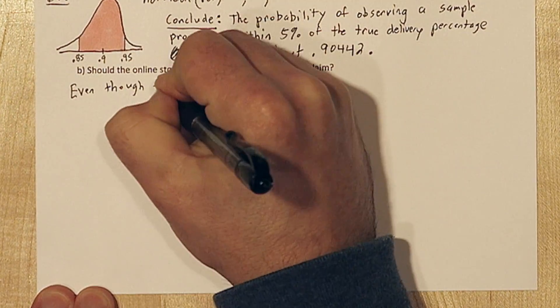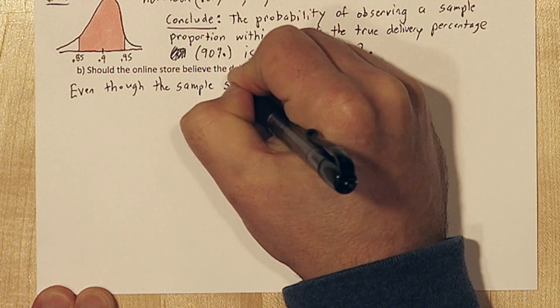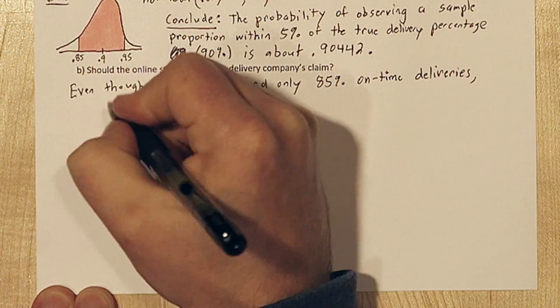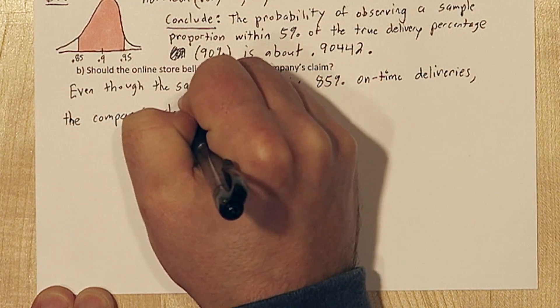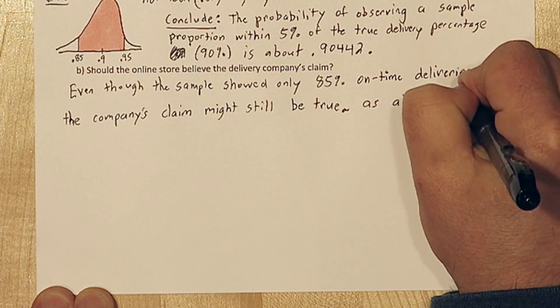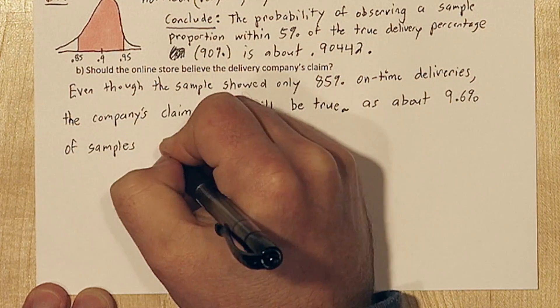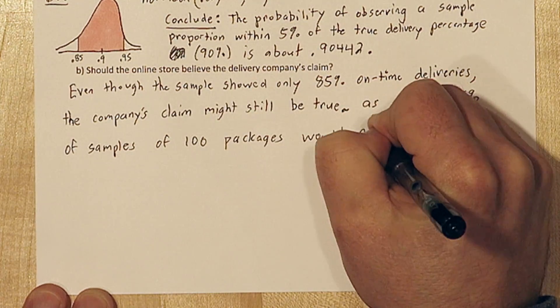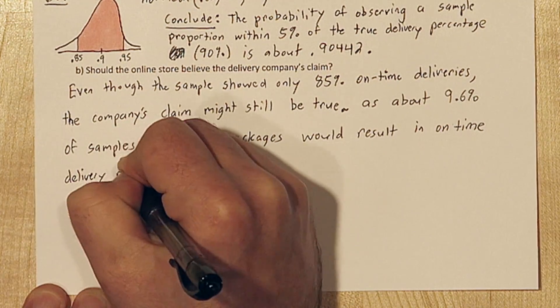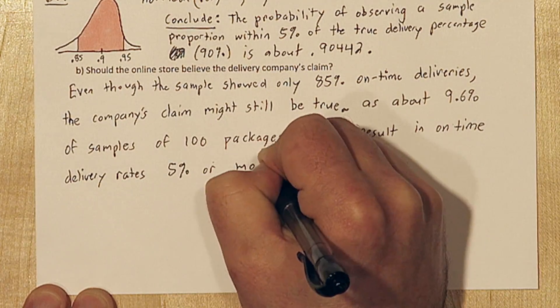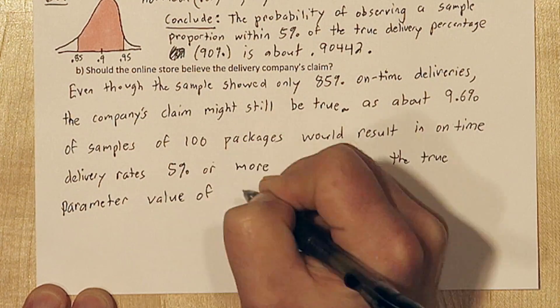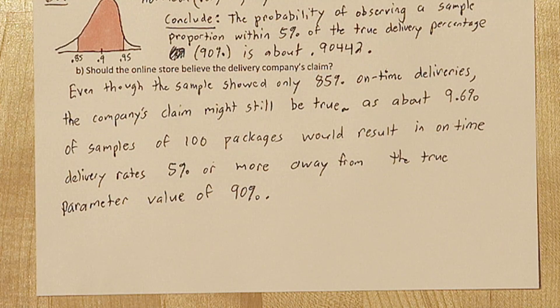If 90.4% of all samples of 100 packages would have on-time delivery rates between 0.85 and 0.95, that means 9.6% of samples of size 100 would have on-time delivery rates outside of that interval. So even though the sample showed only 85% on-time deliveries, the company's claim might still be true, as about 9.6% of samples of 100 packages would result in on-time delivery rates 5% or more away from the true parameter value of 90%.